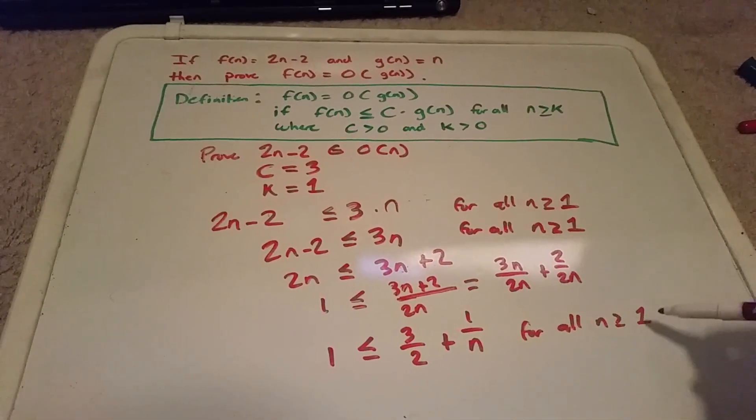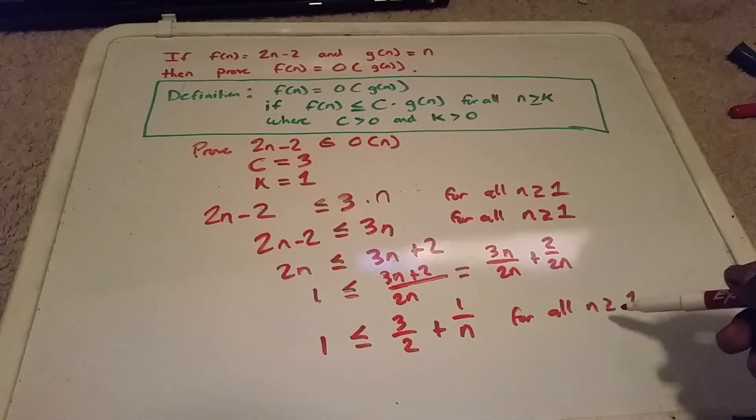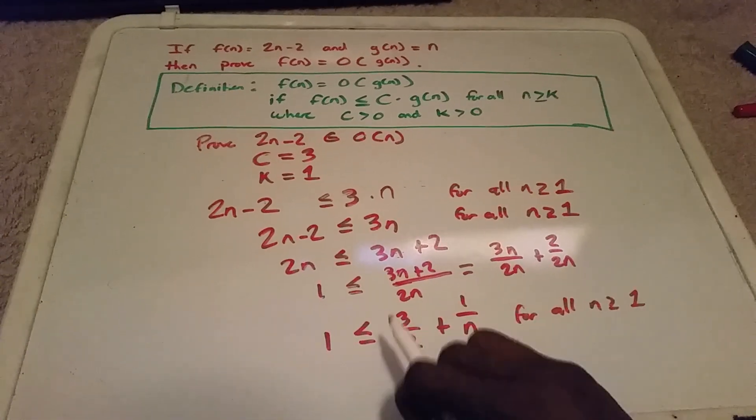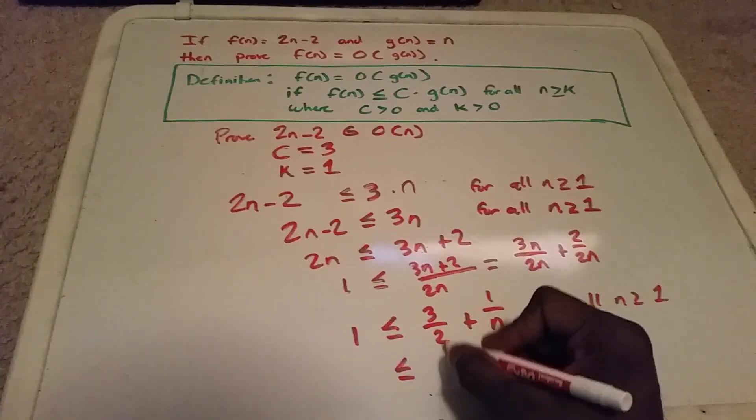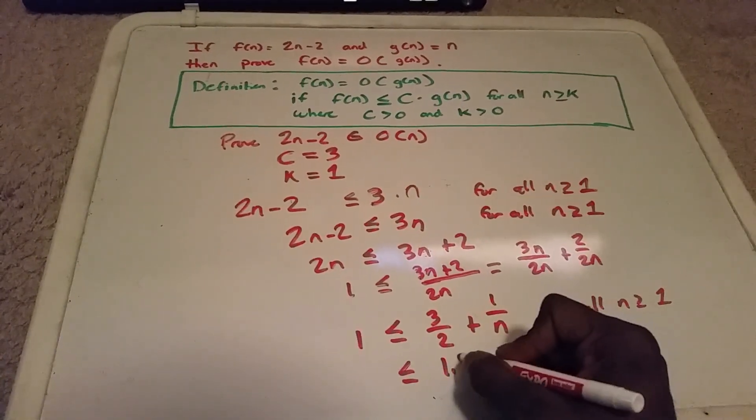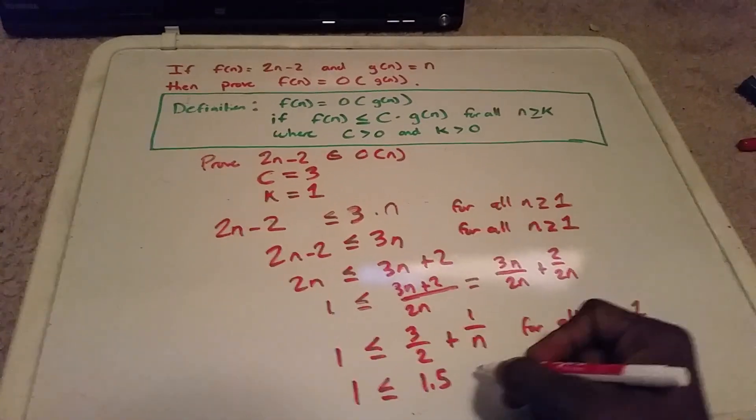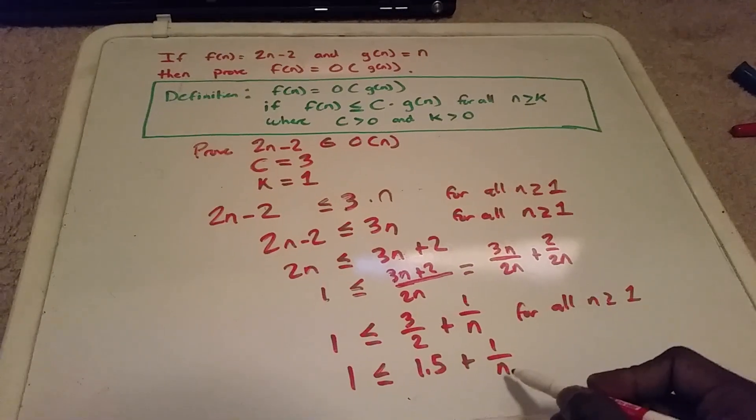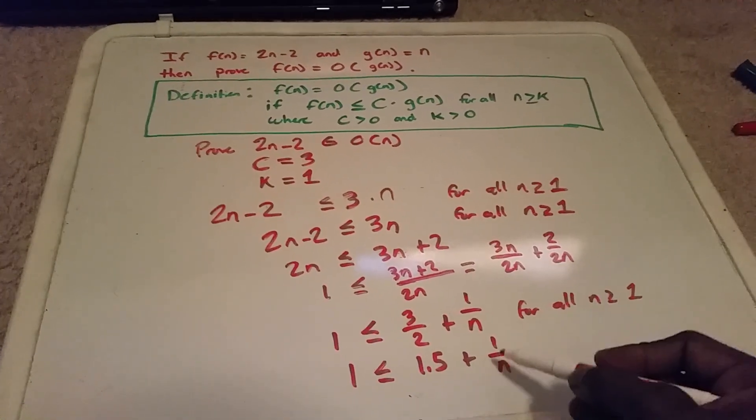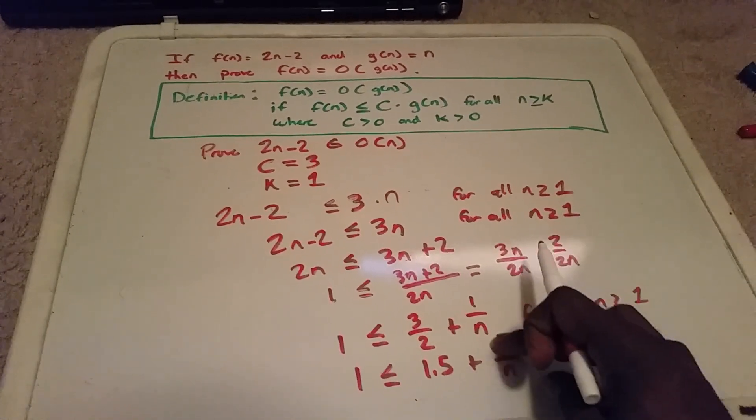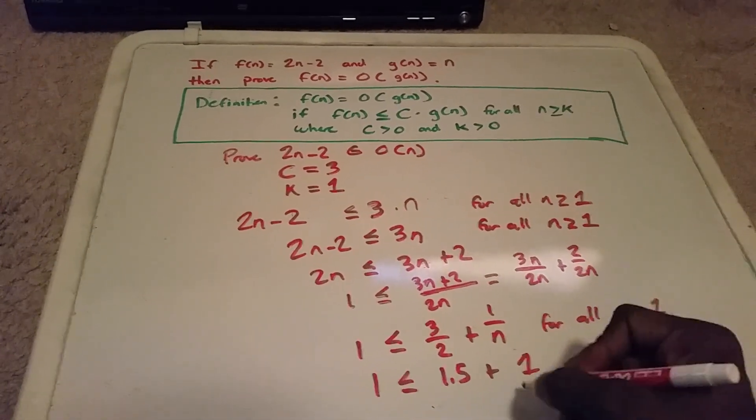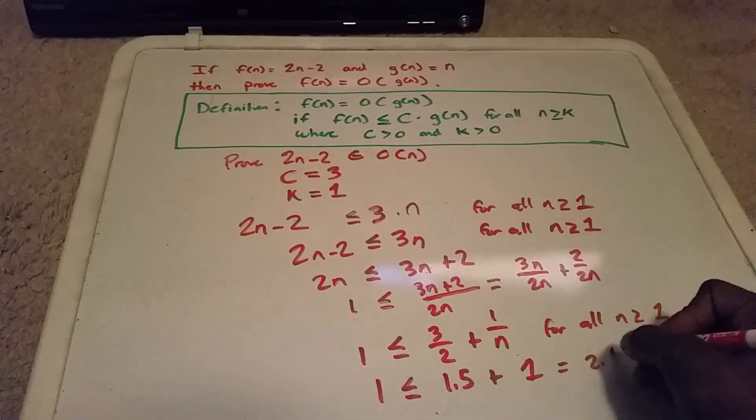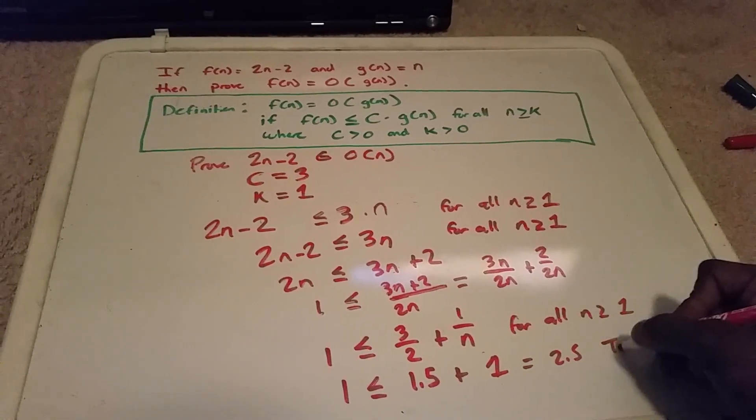We know this is true because 3 divided by 2 is 1.5, and 1.5 plus any number where n is greater than or equal to 1 is going to be at least 1. So this equals 2.5, so it's always true.